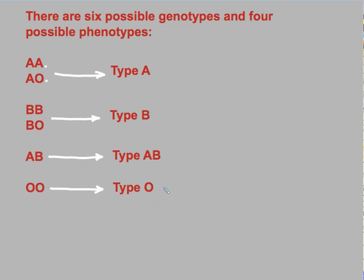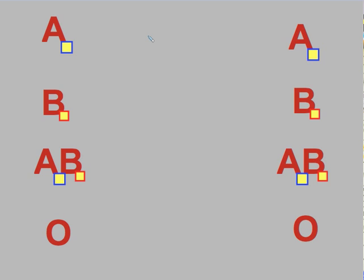Two of these four phenotypes are very easy to identify. If someone possesses type O blood, we can easily identify their genotype. If someone possesses type AB blood, we can immediately know that their genotype is AB. But if somebody has type B blood or type A blood, we're not certain as to whether they are homozygous or heterozygous.